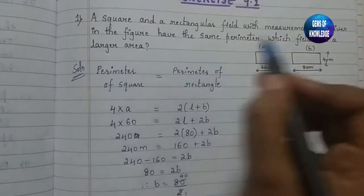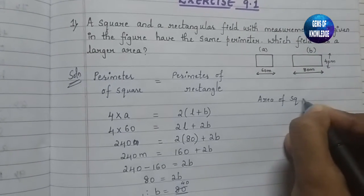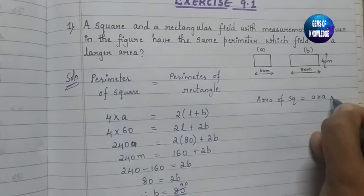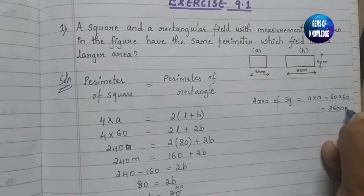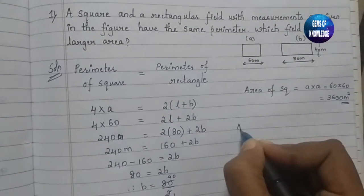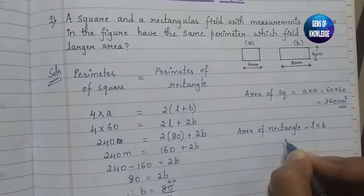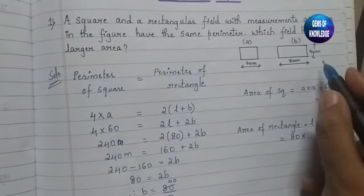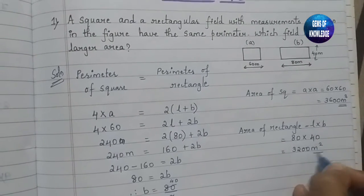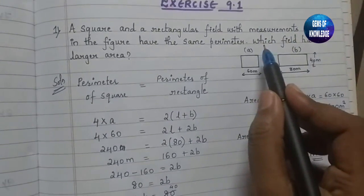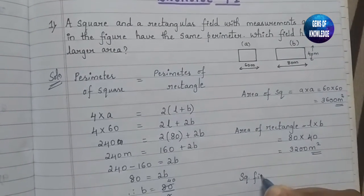Now we find the area of both fields. Area of square = a × a = 60 × 60 = 3600 m². Area of rectangle = length × breadth = 80 × 40 = 3200 m². Comparing the two, the square field has the larger area.